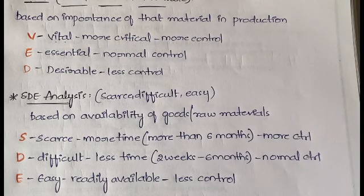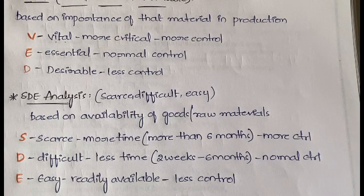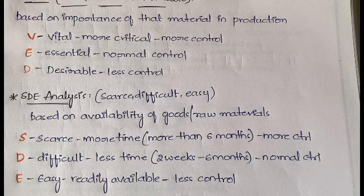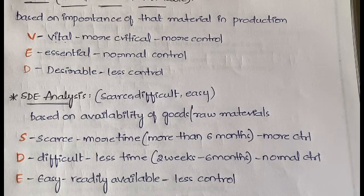So these are the different techniques in inventory control. We have seen ABC analysis, HML analysis, VED, FSN, and SDE analysis. These are the five techniques used in inventory control.